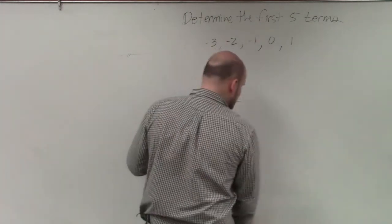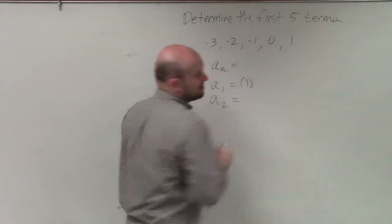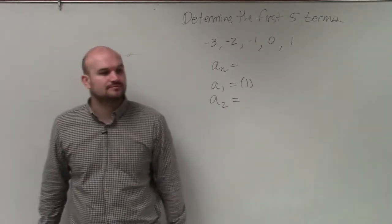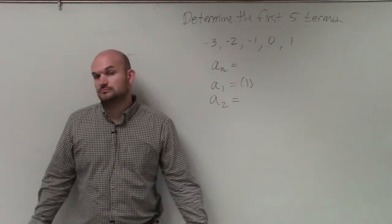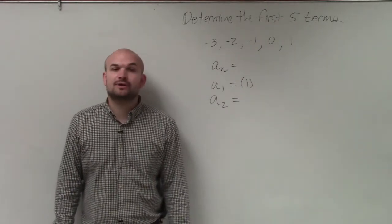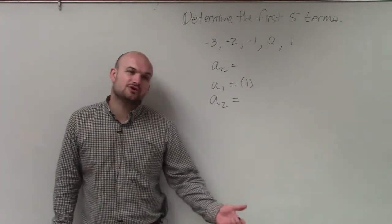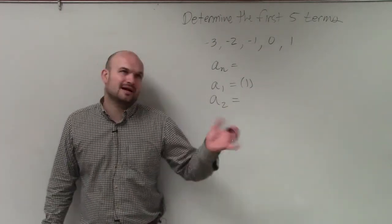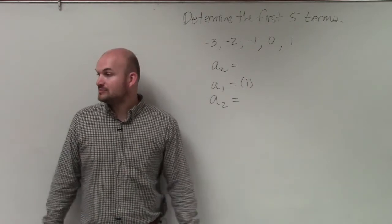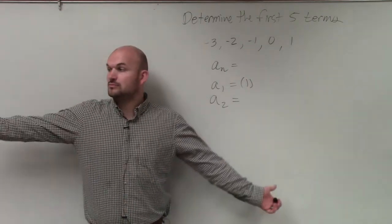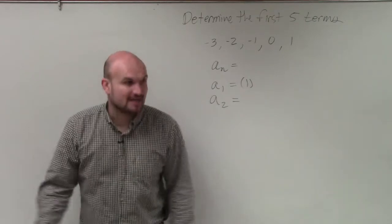So negative 3n doesn't work. Fine. What else could I do to 1 to get to negative 3? Well, we already tried multiplying by negative 3 and that didn't work. We're not going to go through dividing and fractions. So let's look at adding and subtracting. Subtract 4.